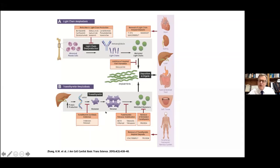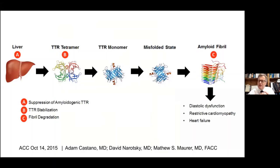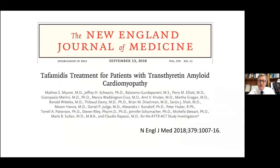A variety of approaches are now being developed for silencing or preventing TTR production within the liver, or stabilizing the native TTR tetramer. The greatest example over the past couple of years is a drug called Tafamidis, which sits in the central pocket of the TTR tetramer — the same pocket in which thyroxine sits — and stabilizes the tetramer, preventing dissociation. TTR is a transport protein.